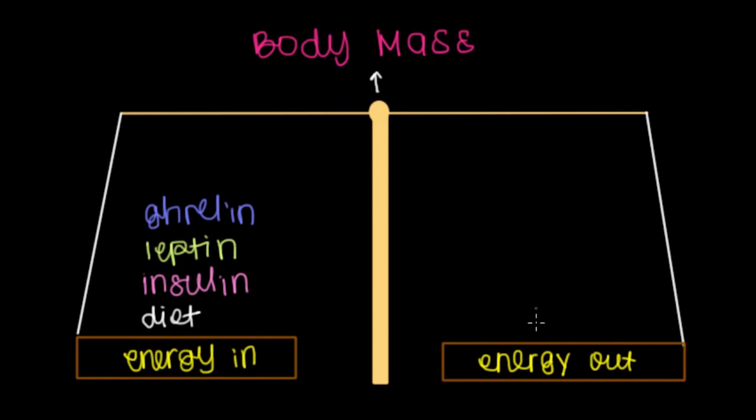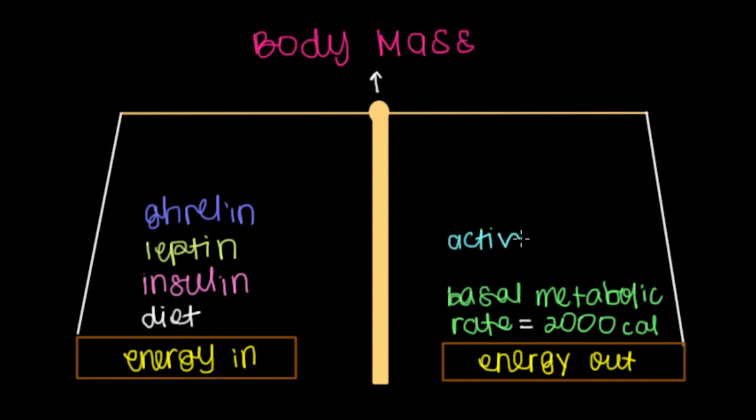Now the things that we do that get rid of energy include things like our basal metabolic rate, or the amount of energy we burn just at rest. That comes out to be in the average person about 2,000 calories in a day. Activity, or the use of energy to perform tasks, comes out to be about 500 calories in the average person.